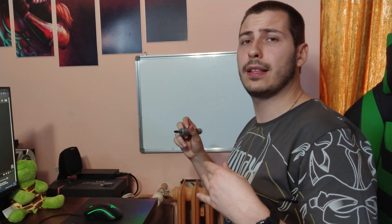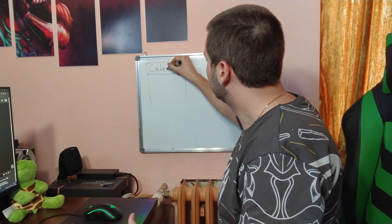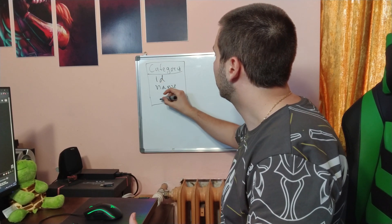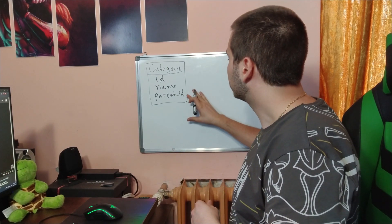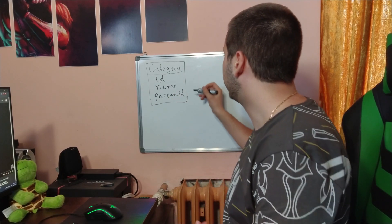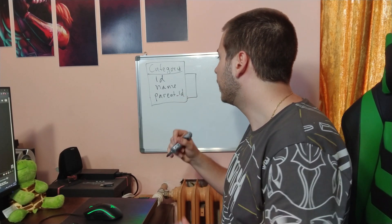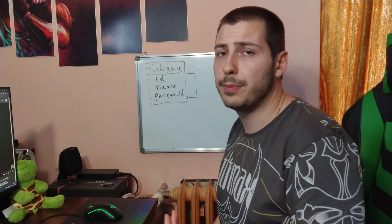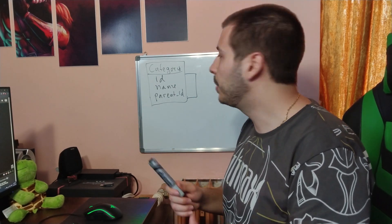The first actual table we are going to need is a category table. This table is going to have an ID, a name, and a parent ID. In order to satisfy this parent ID, we are going to reference the same table with a foreign key, meaning we want to have a category like 'Design', and then 'Design Principles' and 'Design Patterns' will be under that one parent category.